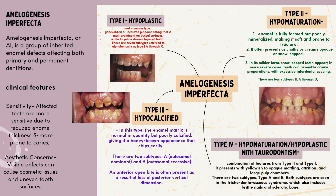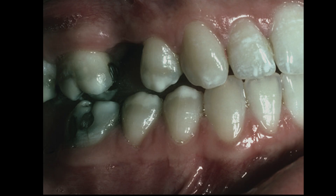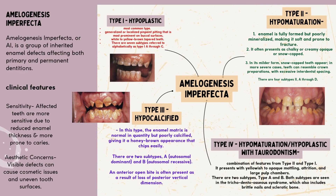Type II: hypomaturation. Here, the enamel is fully formed but poorly mineralized, making it soft and prone to fracture. It often presents as chalky or creamy opaque, or snow-capped. Fracturing of the enamel is common. In its milder form, snow-capped teeth appear. In more severe cases, teeth can resemble crown preparations with excessive interdental spacing. There are four subtypes, IIA through D, with autosomal and X-linked recessive inheritance.